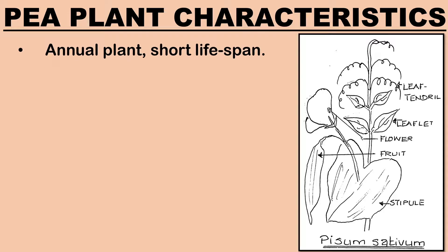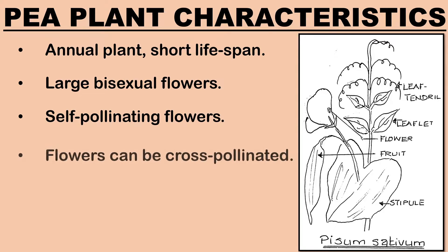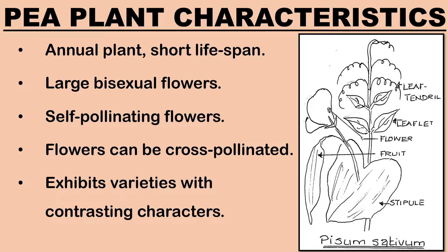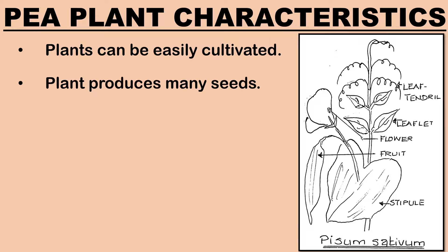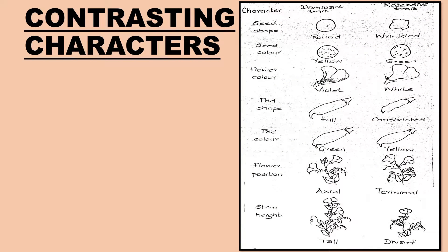Garden pea is an annual plant with a short lifespan so few generations could be grown in a year. Pea plants bear bisexual flowers which are large and easy to handle. The flowers are naturally self-pollinating and so pure lines of traits can be obtained. The flowers can easily be cross-pollinated for conducting experiments. Pea plant exhibits many varieties with distinguished contrasting characters. The plant can be raised, cultivated and maintained conveniently for experimental purposes. The pea plant produces many seeds.